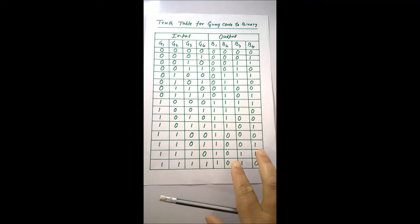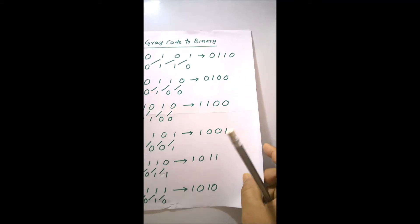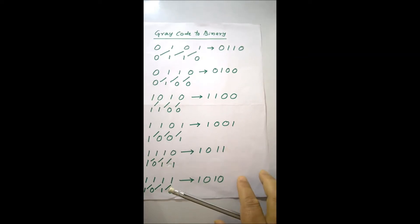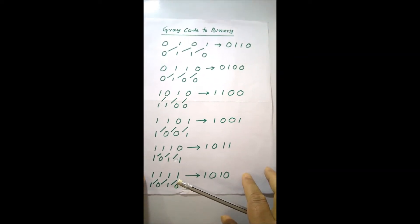And now I am coming to the second method. Second method you can see, you need not to go serially, any number you can convert. Here you can see,